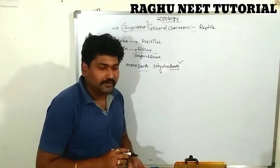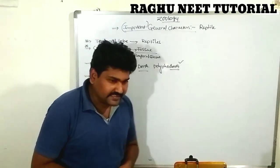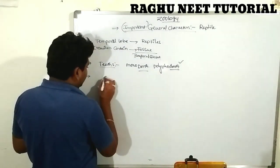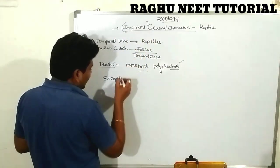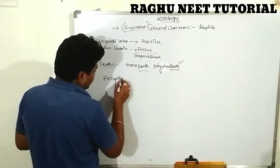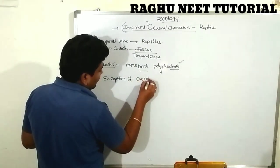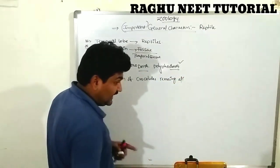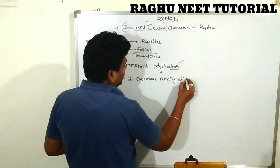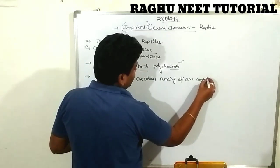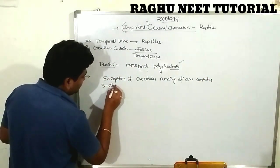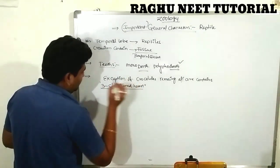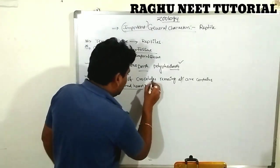The reptiles consist of a three-chambered heart — with the exception of the crocodile, which is a very important character. All remaining reptiles contain a three-chambered heart, while the crocodile contains a four-chambered heart.